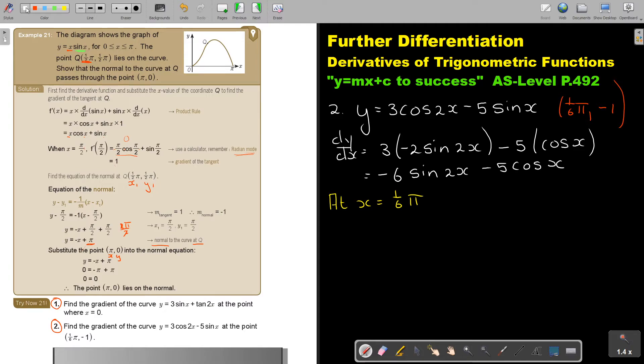Then, dy by dx will be negative 6 sin 2 times 1 over 6 π minus 5 cos 1 over 6 π. Now, if I simplify this. This is very important because it's double. It will be 2 over 6, which will give me 1 over 3. So, it's sin 1 over 3 π minus 5 cos 1 over 6 π.